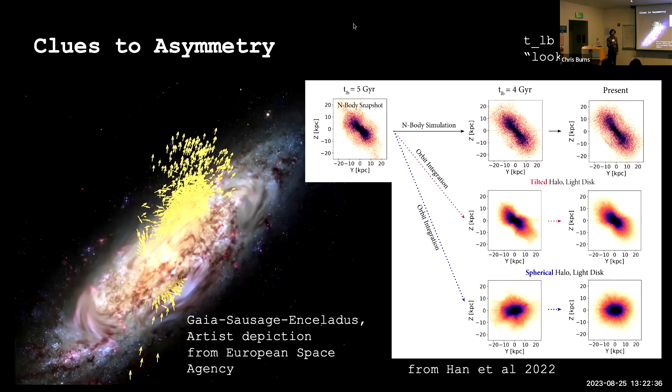Now, if it were to have originated that long ago, it could not have survived in a spherical halo. This is a study from Han and what they showed in this paper is that taking initial conditions five billion years ago and putting it into a spherical halo resulted in tilted structure loss over just one gigayear. Whereas in a tilted halo, we maintain this tilted structure. So this motivates us to study whether we can constrain the tilt if there is one.